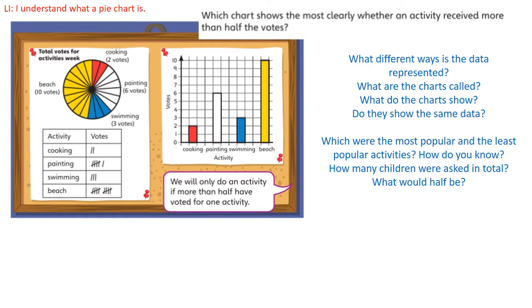Then we go to the pie chart. Now pie graphs are always round, and again we can see that the cooking got two votes, the painting six, the swimming three, and the beach ten. But this time it's much easier for us to see if any of those is more than half of the whole number of votes counted.